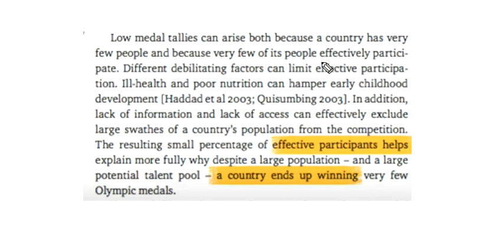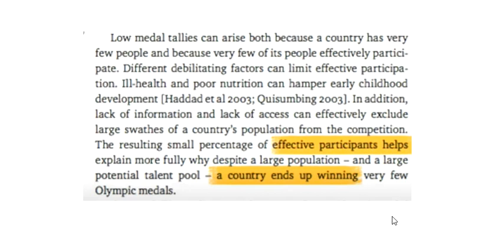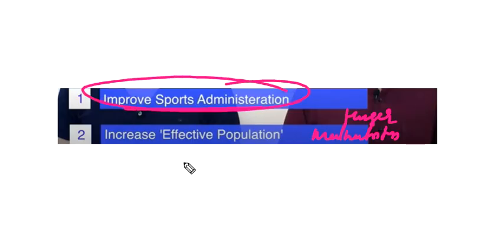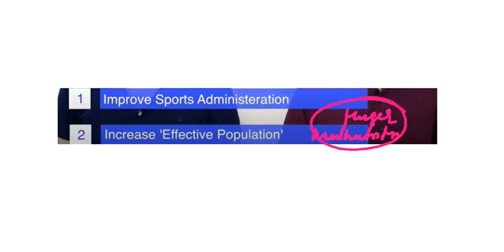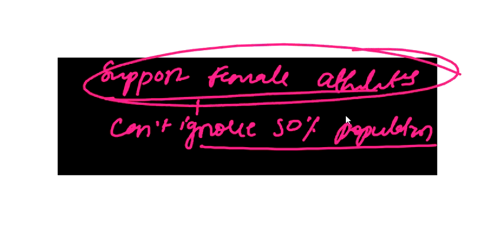We need to increase effective participation in sports — not just population size, but effective participation is what helps a country win. There is a potential talent pool, but a large portion of India's population is affected by hunger and malnutrition. Focus should not only be on academics but also on sports. We also cannot ignore 50% of the population, so we need to actively support female athletes as well.